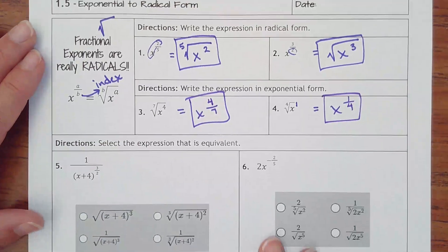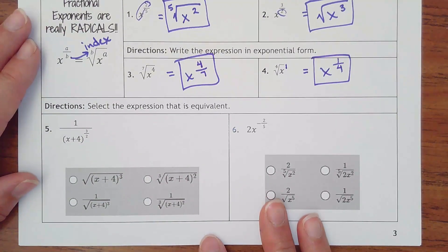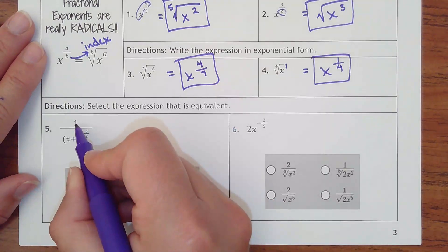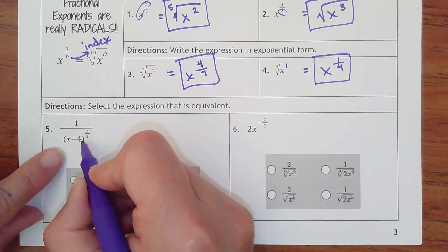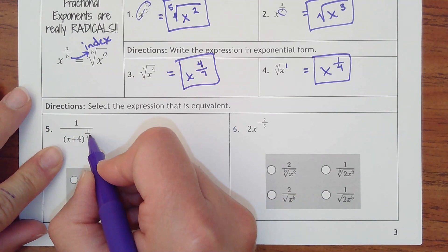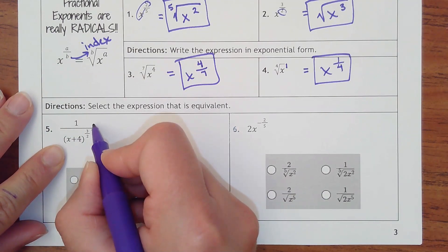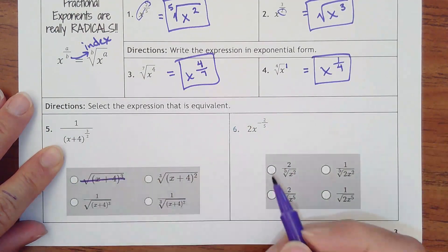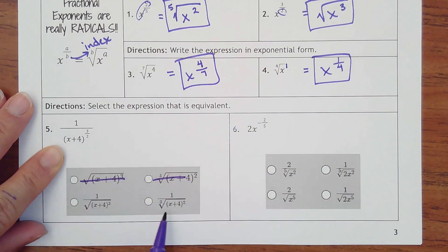Okay, and then I've got two problems that are multiple choice. It says select the expression that is equivalent. So in this problem, I have one over something. This whole x plus four is being taken to this power. It doesn't need to move to the numerator because it's not a negative power, so I know it can't be that or that. It has to stay in the denominator. It's really all about how do I rewrite this as a radical.